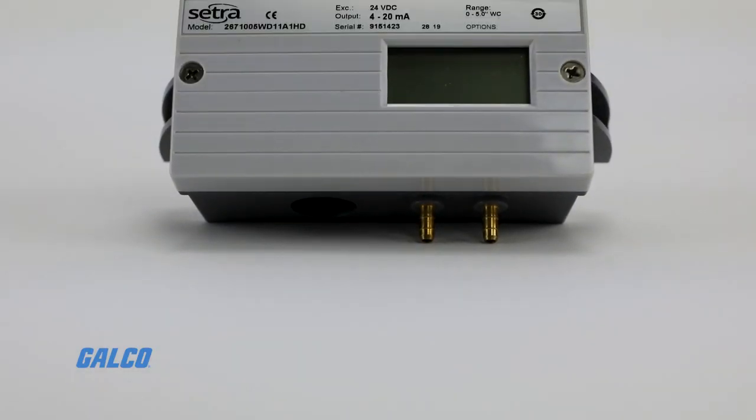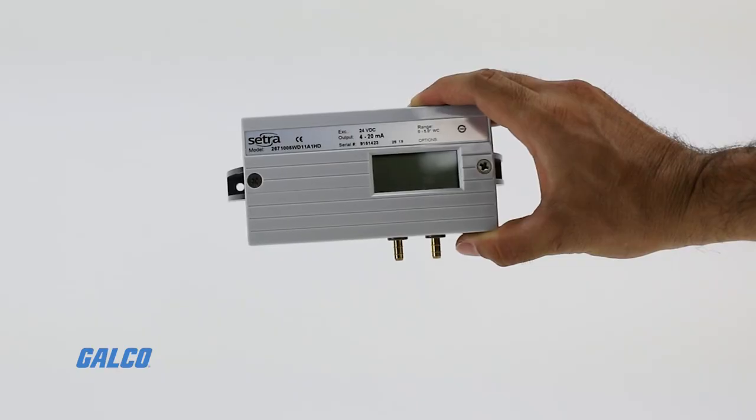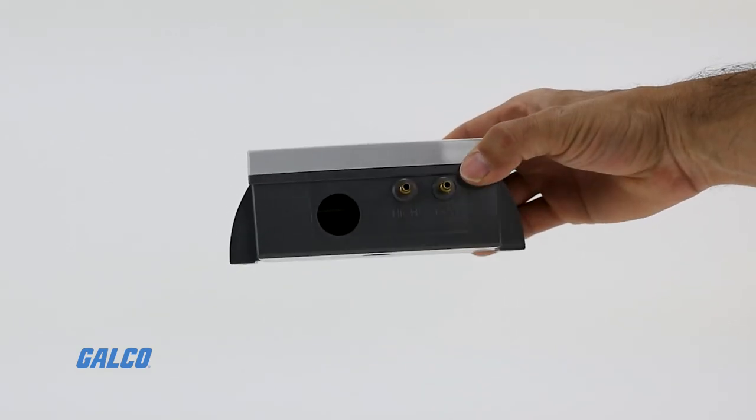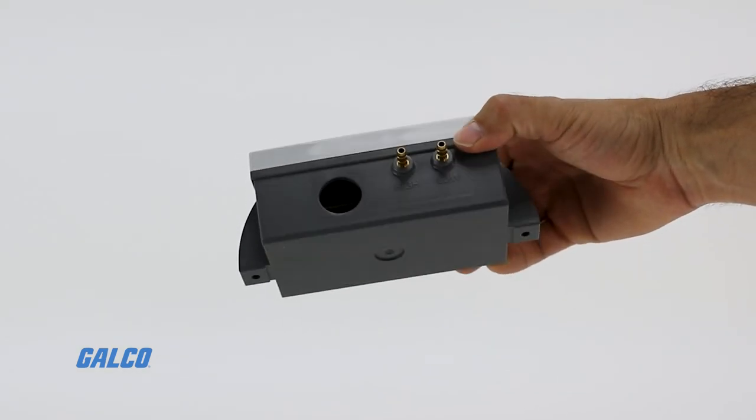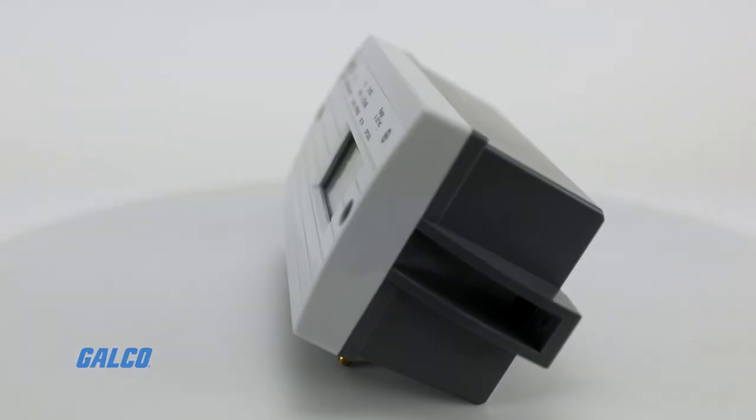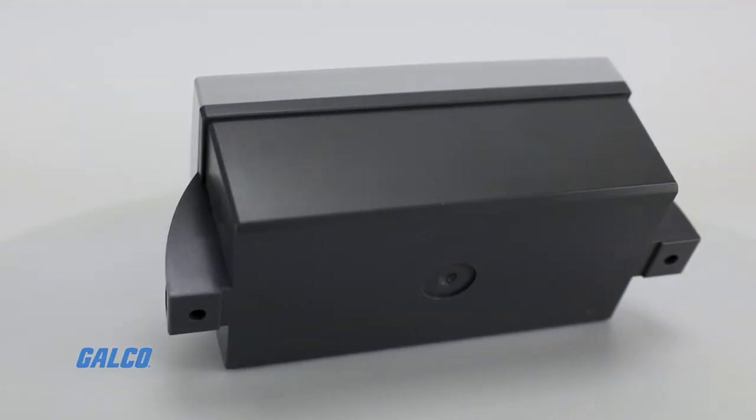The 267 is housed in a robust NEMA 4 rated enclosure and is suitable for harsh environments. It is available in both wall and duct mounting.